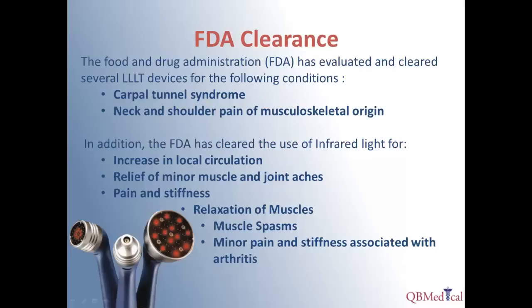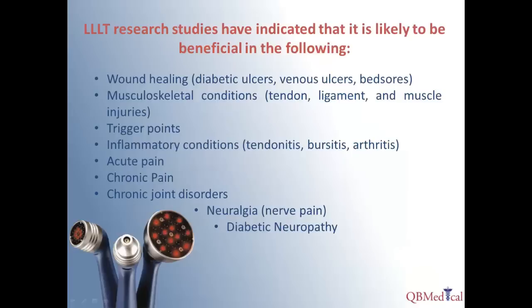The FDA has cleared low-level laser therapy devices for the treatment of carpal tunnel syndrome and for the treatment of neck and shoulder pain of musculoskeletal origin. The use of infrared light in general has been cleared for localized circulation, muscle and joint aches, pain and stiffness, relaxation of muscles for muscle spasms, and for arthritis. Though currently the FDA has only approved LLLT for a handful of indications, this is an emerging technology with a lot of promising research being conducted.